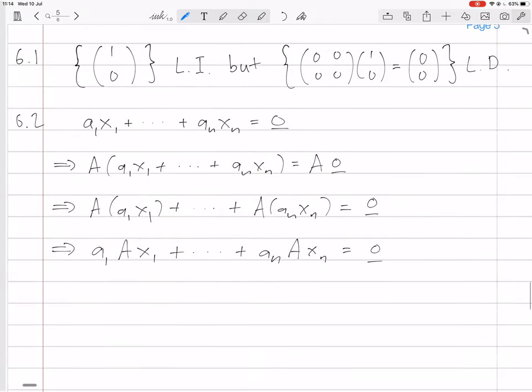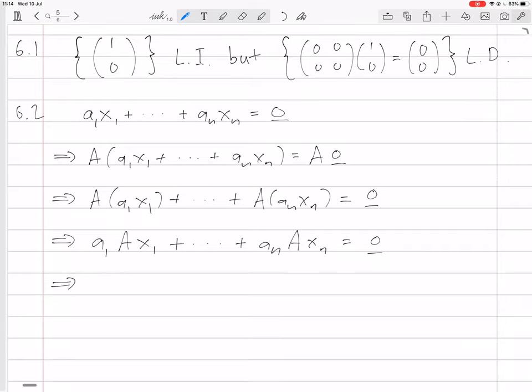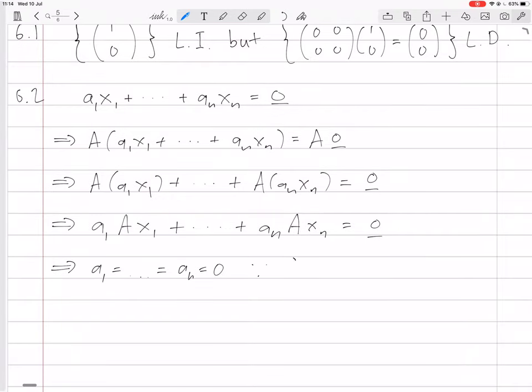And now this is a linear combination of ax1 to axn, so that implies that a1 equals a2, or all equal zero, because ax1 to axn was assumed to be linearly independent.